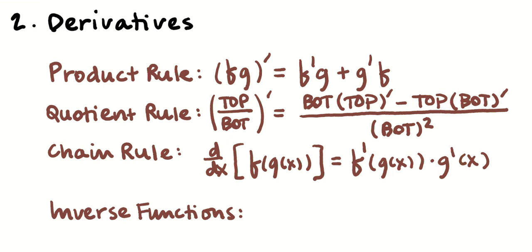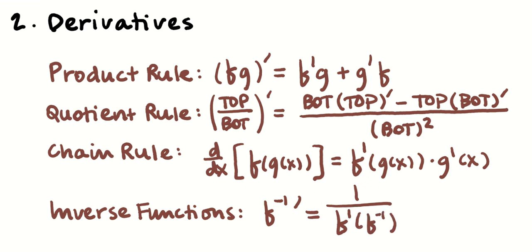One you may have forgotten is the derivative of the inverse function. The formula is: (f⁻¹)′(x) = 1 / f′(f⁻¹(x)). That one is a little obscure, so if you don't remember it, go back to unit two lesson four, or my third Calculus AB review video on obscure topics.